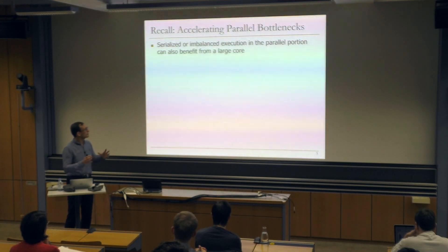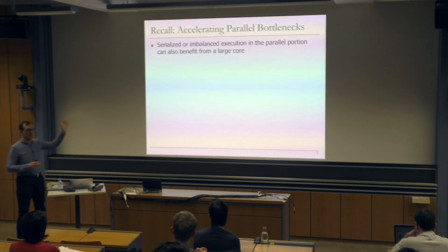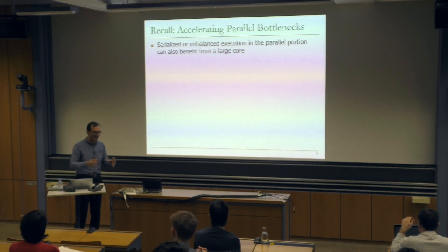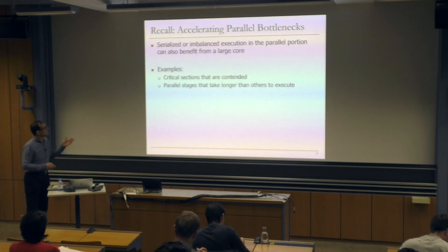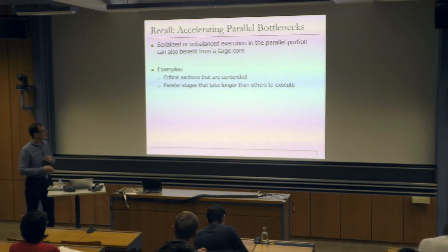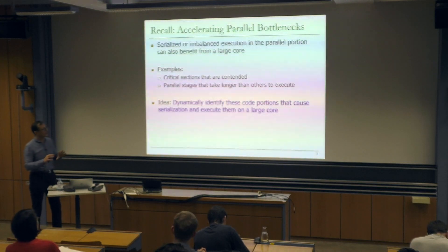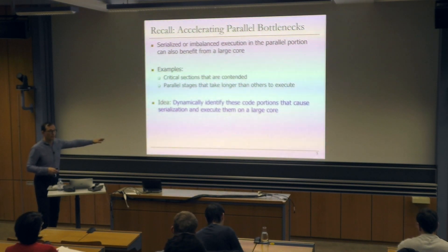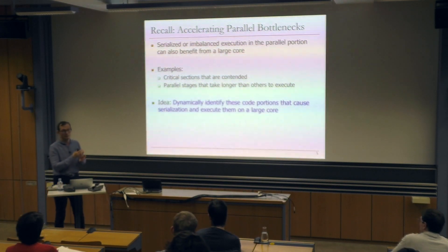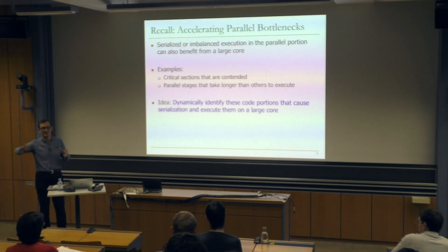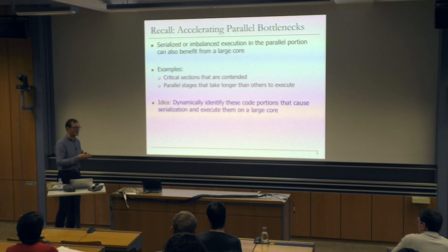Examples are critical sections that are contended and parallel stages that take longer than others. We're going to dynamically identify these code portions that cause serialization and execute them on a large core — prioritize and accelerate them. Executing them on a large core is one way; prioritizing them in the memory scheduler is another; prioritizing them in the cache is another. Ideally we'd do all of that, because this is the critical part of your code. The rest is not critical at the moment, so you should focus all resources to get this done quickly so it doesn't remain the bottleneck.